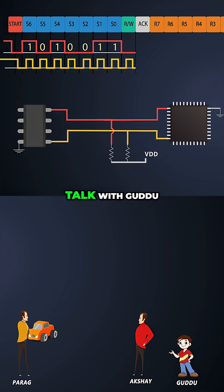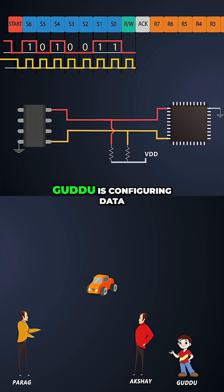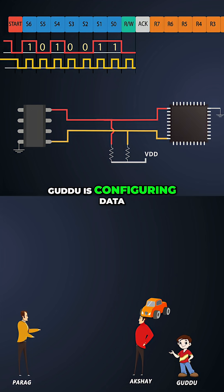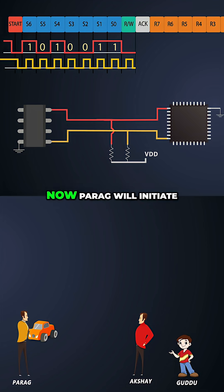If Parag wants to talk with Guddu, he will have to go through Akshay. Similarly, giving a toy car to Guddu is equivalent to configuring data in the RTC chip's register.